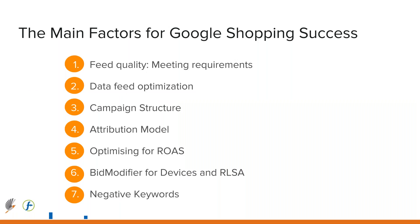We've had quite a bit of information today — hopefully you found a lot of value and took some notes. We talked about feed quality: meeting feed requirements, optimizations, campaign structure, attribution, optimizing return on ad spend, bid modifiers, and negative keywords. We now want to open it up for questions — please put your questions into the questions section of the webinar.